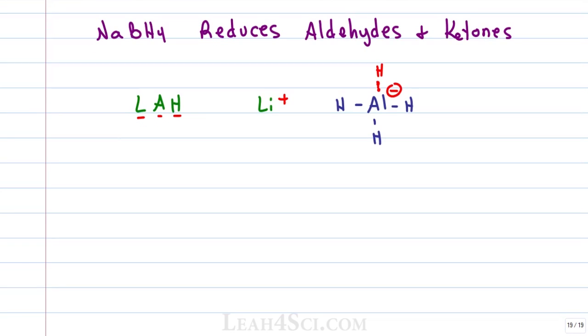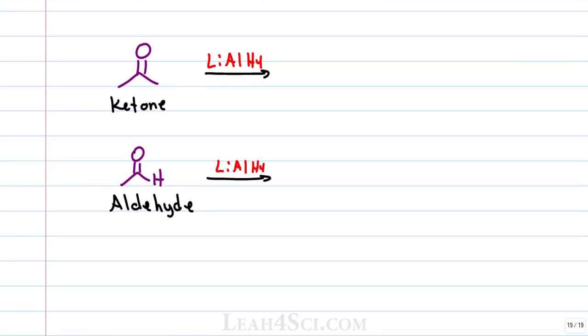Lithium aluminum hydride will react with many carbonyl compounds, typically reducing them to alcohols. We use the same trick we did last time where you break the pi bond and simply add hydrogen to both carbon and oxygen. A ketone gets reduced to a secondary alcohol and an aldehyde gets reduced to a primary alcohol.